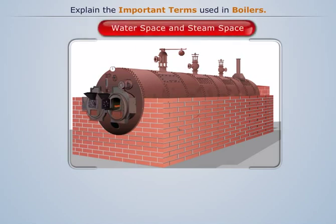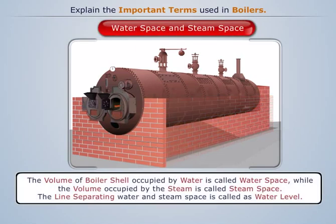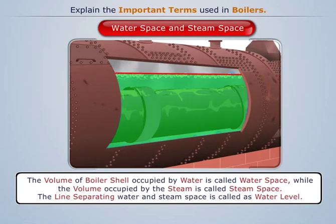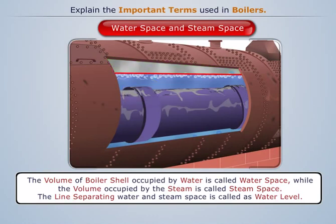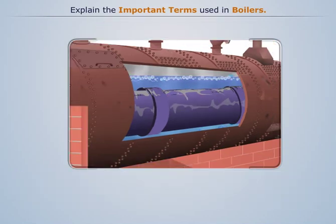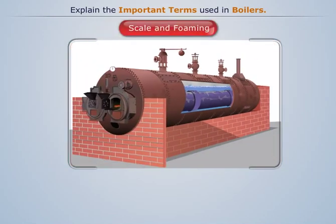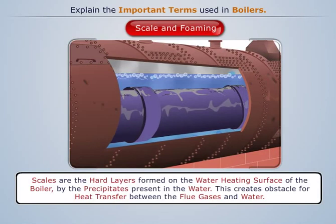Water space and steam space: the volume of the boiler shell occupied by water is called water space, while the volume occupied by the steam is called steam space. The line separating the water and steam spaces is called the water level.